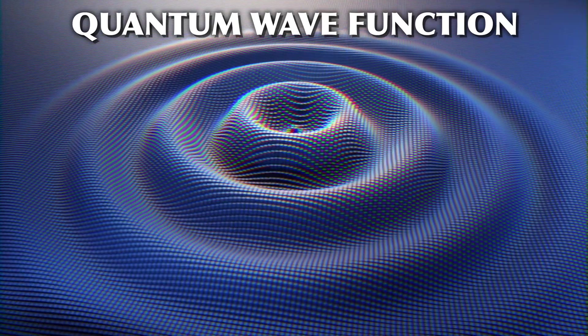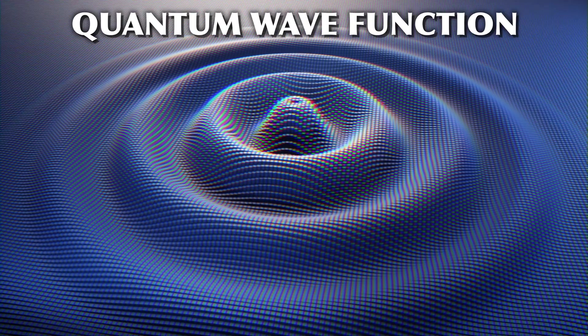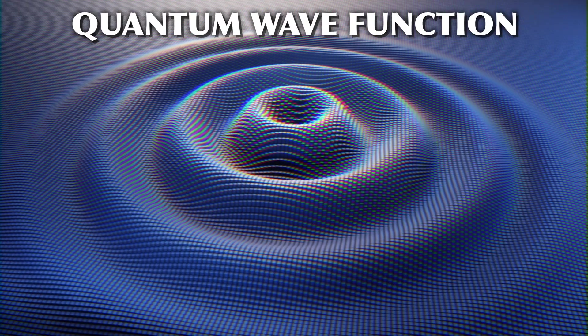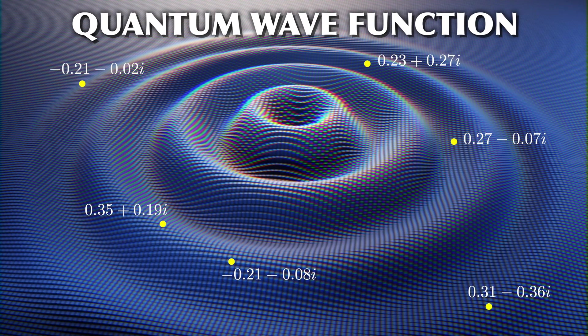In fact, each wave function - the basic description of every quantum system - is a function outputting a complex number at each point in space, at every point in time.